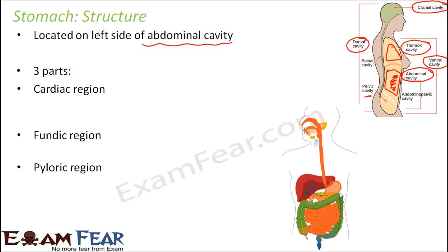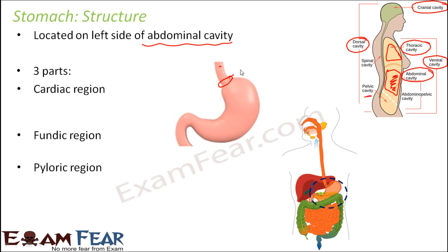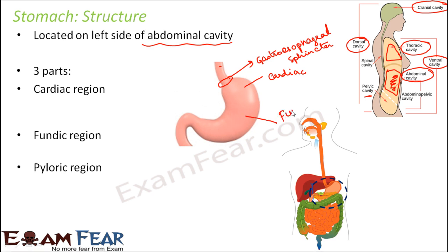Looking at a magnified image of the stomach: the pipe coming from above is the esophagus, and here you have a sphincter called the gastroesophageal sphincter, which acts like a valve to regulate the amount of food entering from the esophagus into the stomach. The topmost region is the cardiac region. The middle expanded portion where food actually gets stored is the fundic region. The terminal portion of the stomach is the pyloric region, and between the stomach and small intestine there is another sphincter known as the pyloric sphincter.